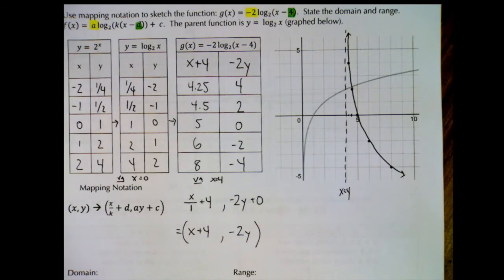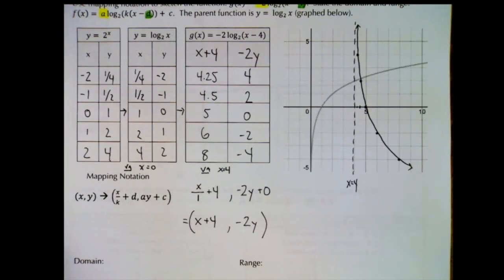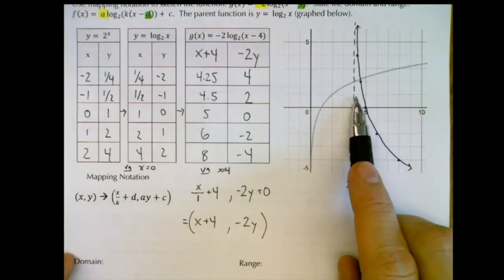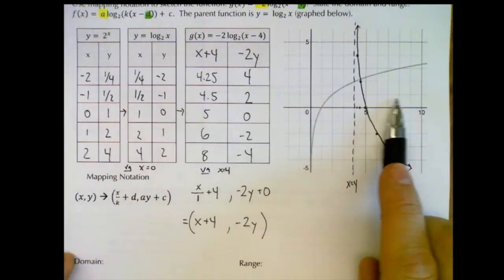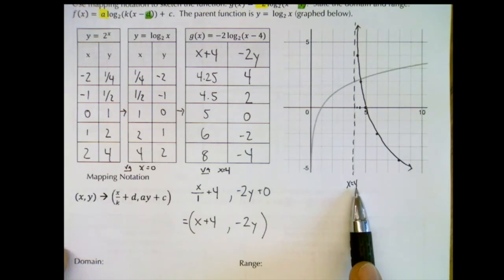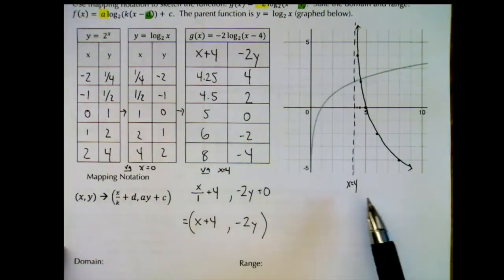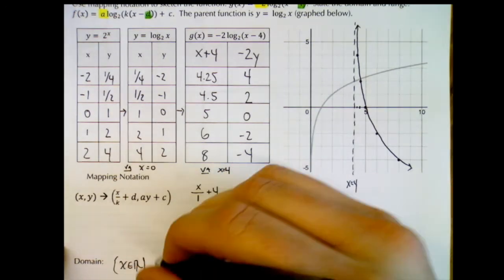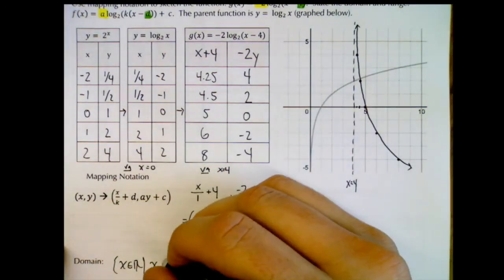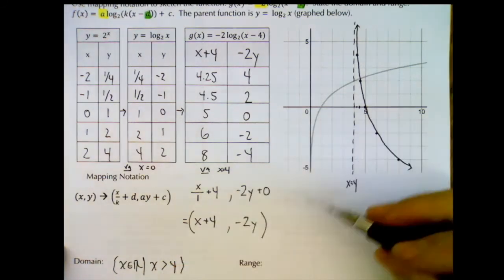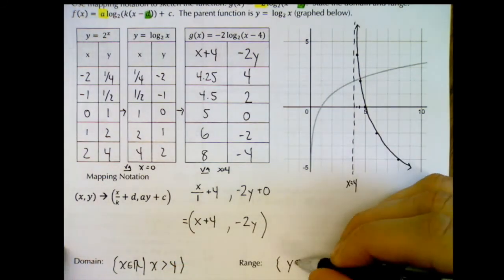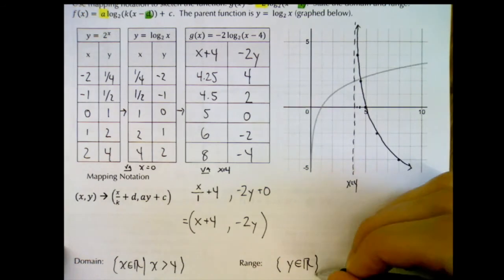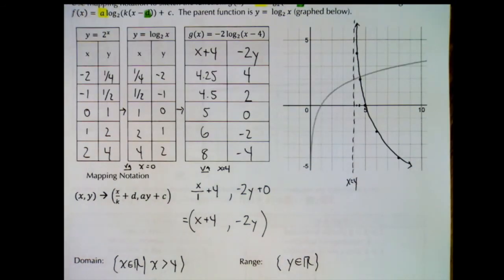For the domain and range: the graph only exists to the right of our asymptote, so x must be greater than 4. We don't touch the asymptote, so the domain is x belongs to the reals such that x is greater than 4. For all logarithmic functions our range is simply y belongs to the reals.